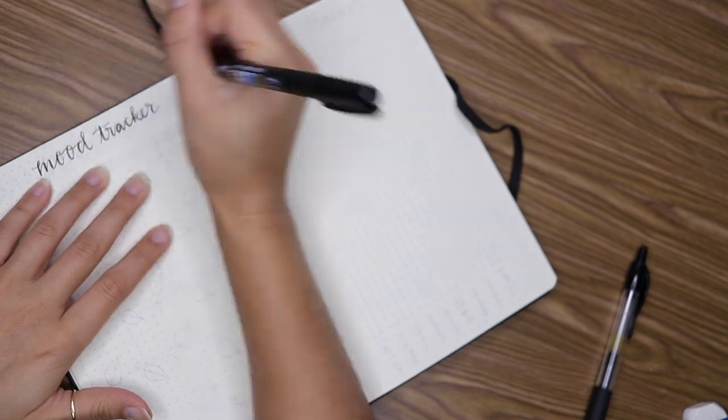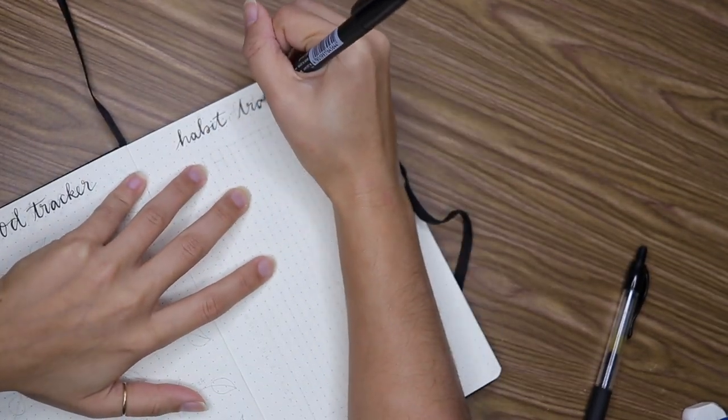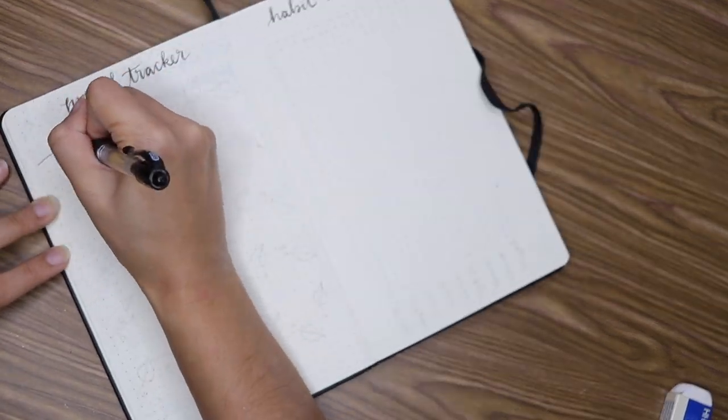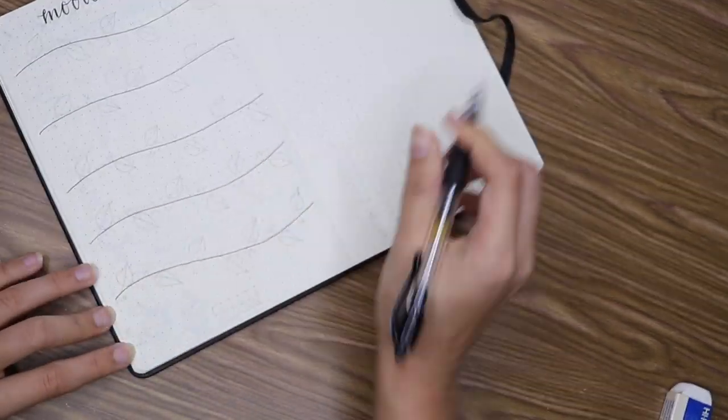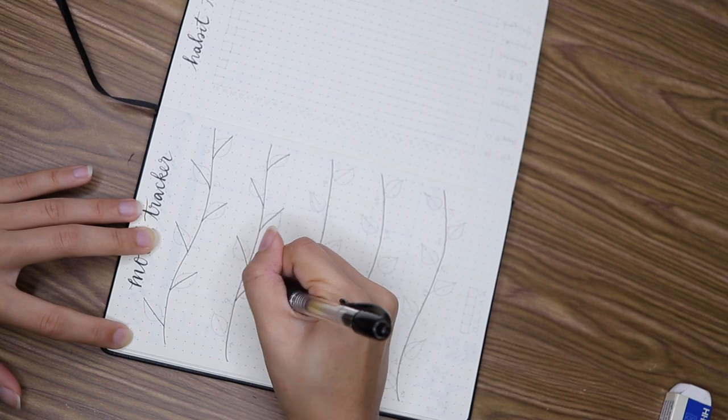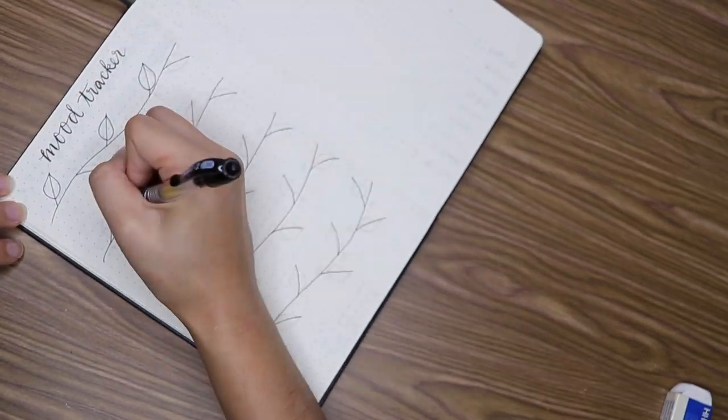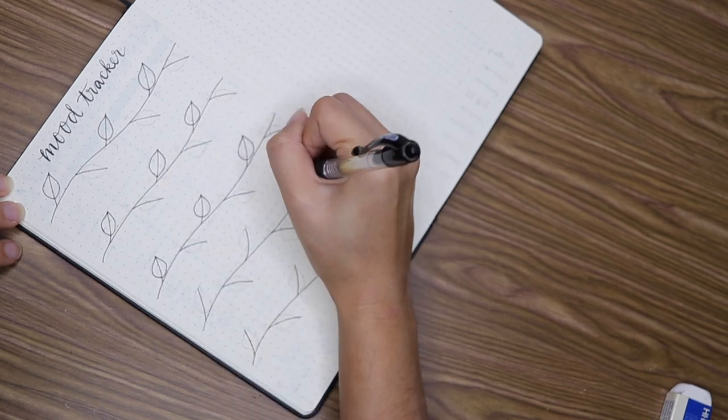On the next page are my mood and habit trackers. So for my mood tracker I just drew vines and each leaf on the vine represents one day of the month. And I will color it in according to my mood based on the legend that I made at the bottom.